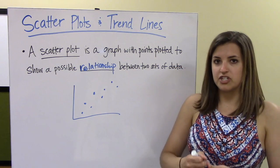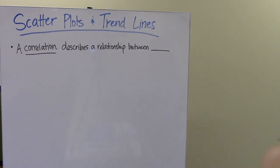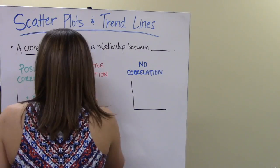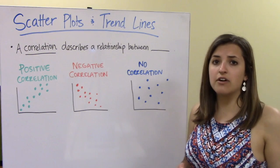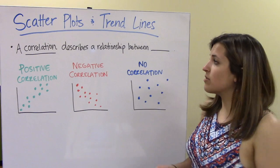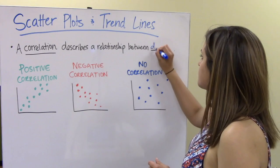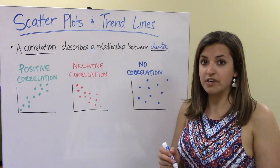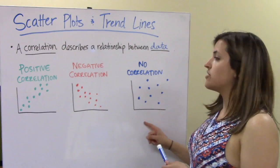Another part of today's lesson is about correlation — whether two sets of data are correlated or not. A correlation describes a relationship between data. Here are the three different types we're going to look at: positive correlation, negative correlation, and no correlation.